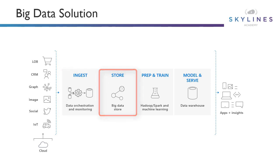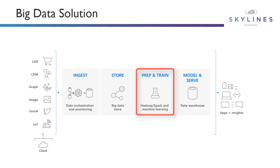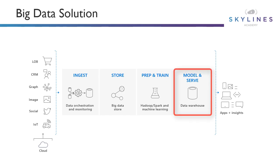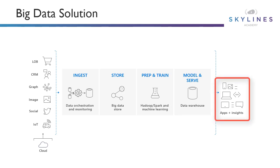Ultimately, they're ingesting that data and storing it somewhere in a big data store. Once it's in that big data store, we can use things like Hadoop, Spark, and machine learning algorithms to prepare and train the data. When the data is ready for complex analysis, things like SQL Data Warehouse use Polybase — a tool under the covers — to query the big data stores using T-SQL queries to bring the data into SQL Data Warehouse. All of this is to provide apps and insights on top of that data to help the business make good decisions.